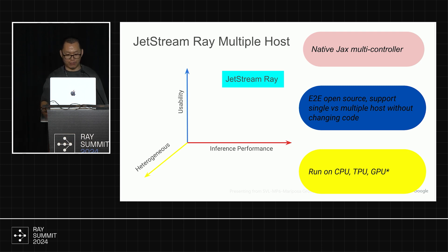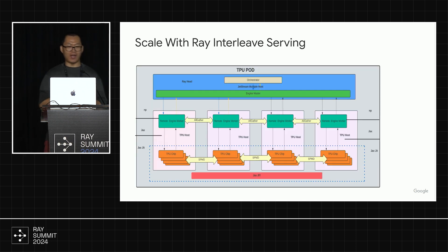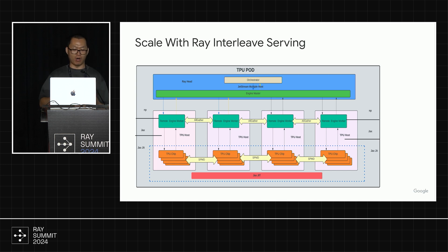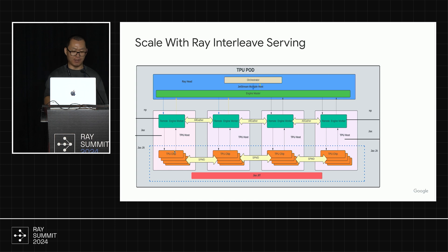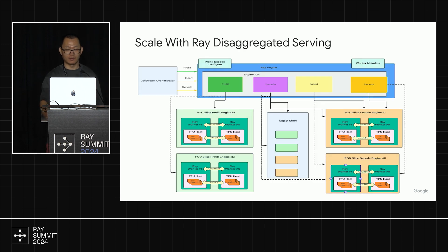For the next two slides, I'll show the high-level architecture for how we do multiple host. The first one is interleave serving. When we talk about interleave serving, it's about doing the pre-fill and decode on the same host and same chips. Here I'll show the example of how we do this with JAX. There are three layers: the top side is non-Python, so you can use your JAX engine or PyTorch engine. At the bottom is something like compiling your code to machine code. And in between is JAX code to do all-gather and collect things from different hosts.